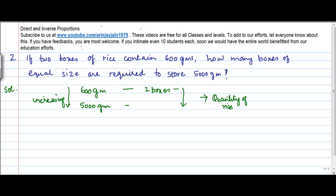Can't we? Of course, why not. If that be the case, then the ratio of these two numbers, 600 upon 5000, should be equal to 2 upon x, where x represents the number of boxes required to store 5000 grams.